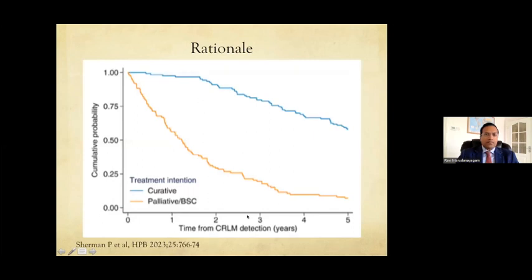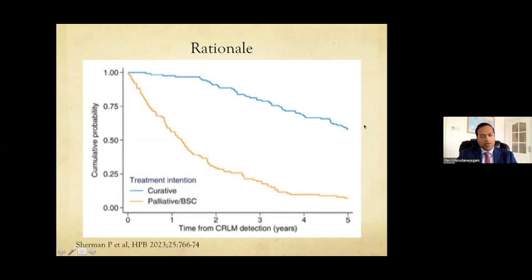The reasoning for liver resection for colorectal liver metastasis: this includes all-stage colorectal liver mets, irrespective of the number or size. There is a significant difference in five-year survival between resection and palliation or best supportive care. That's the reason we keep doing surgical liver resections.